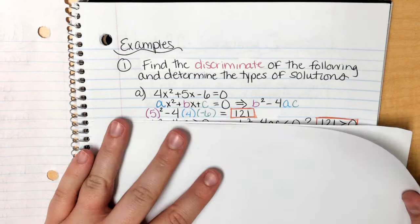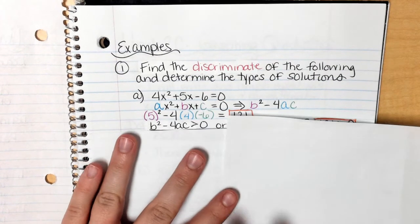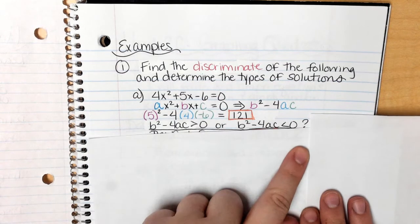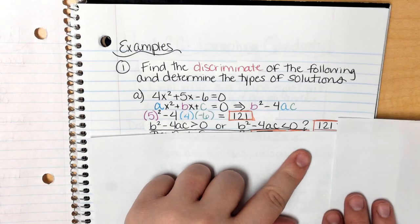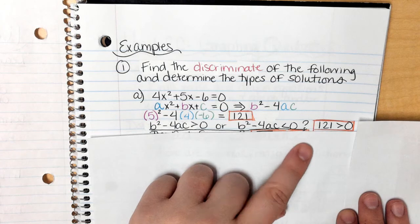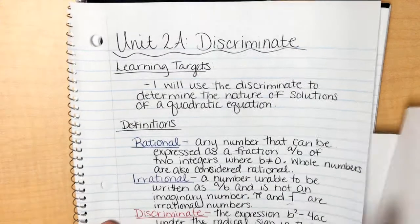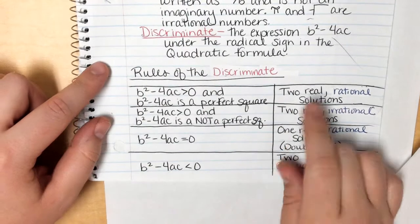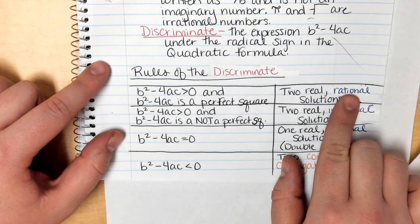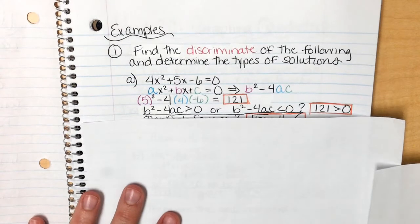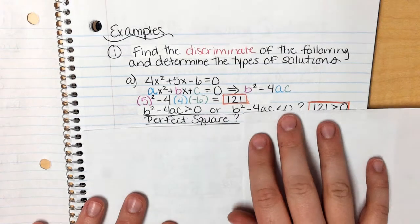So then the question is, is my discriminant greater than 0 or is it less than 0? Well, 121 is greater than 0. So that means that it's either one of the first two situations. So I'm going to flip back here. So since it's greater than 0, it's either going to be two real rational solutions or two real irrational solutions. So let's keep going to see what goes next. Then the next question, is it a perfect square? So in other words, if I take the square root of 121, do I get a whole answer?